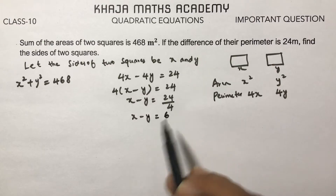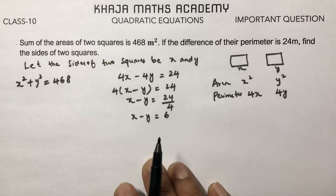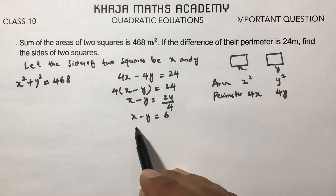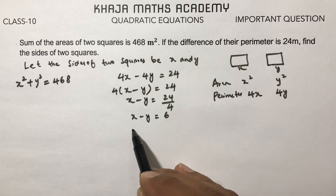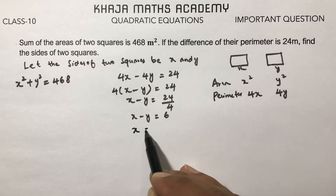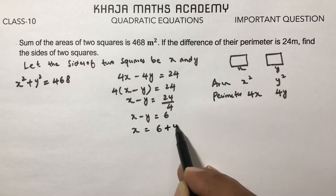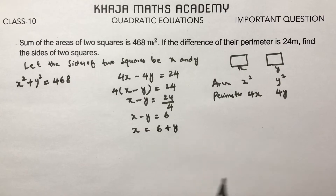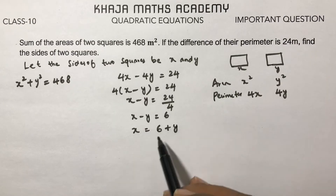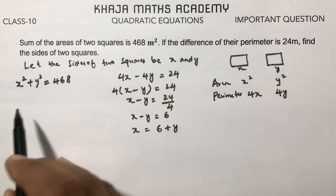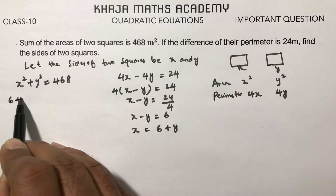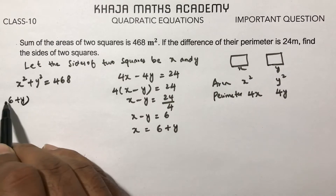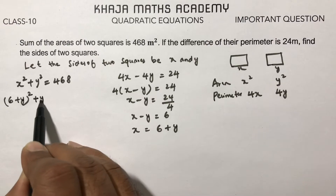From x − y = 6, we get x = 6 + y. We substitute this value of x into the area equation, replacing x with (6 + y): so (6 + y)² + y² = 468.